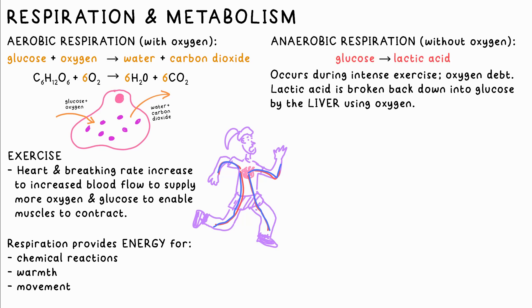Anaerobic respiration occurs when there's a lack of oxygen. Glucose is instead converted straight into lactic acid, which releases some energy, but less than aerobic respiration does. This is what you feel when your muscles ache during intense exercise. This poison can't stay in your body, so there is an oxygen debt built up — meaning more oxygen is needed afterward to break down this lactic acid in the liver, where it's turned back into glucose.